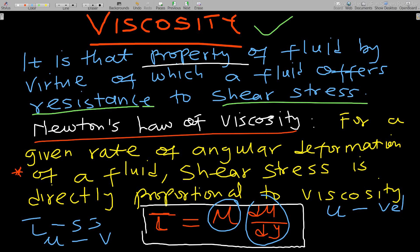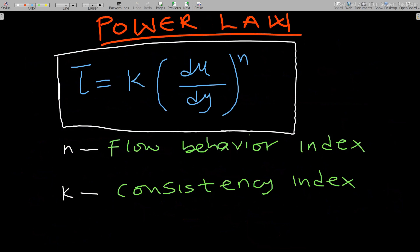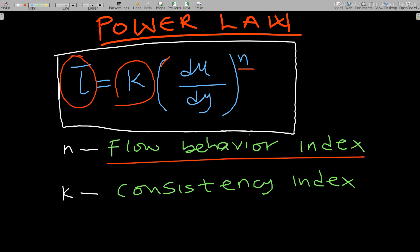Next we have the Power Law. The formula states that tau (shear stress) equals some constant k multiplied by (du/dy) to the power of n. The value n determines the flow behavior, and k determines the consistency.